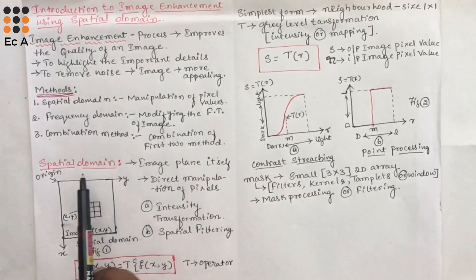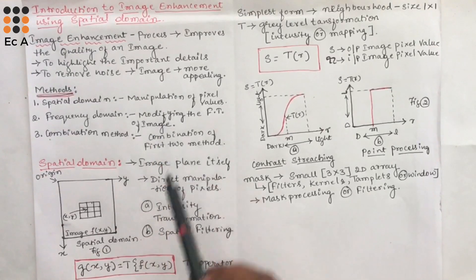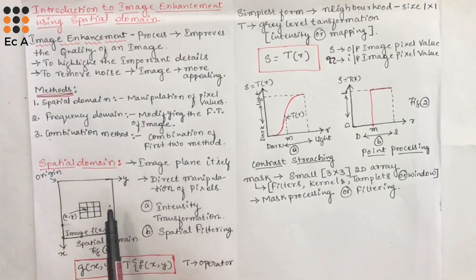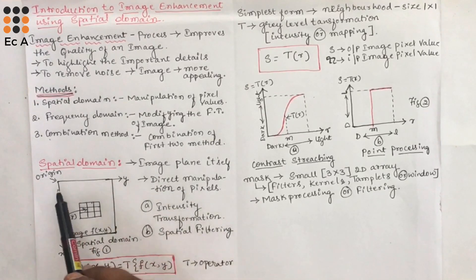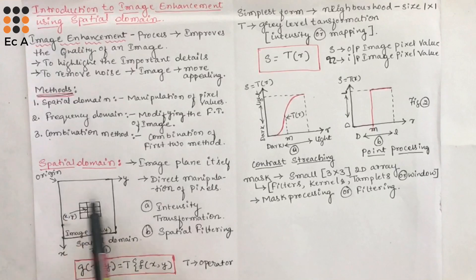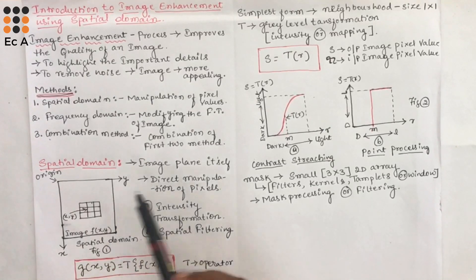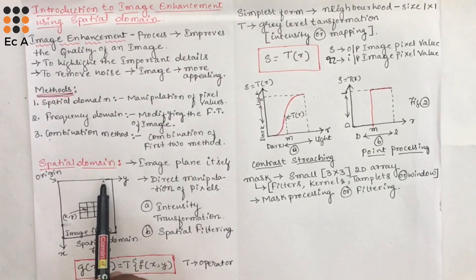The third method is the combination method, which is a combination of the first and second methods. The term spatial domain refers to the image plane itself. If you consider an image with pixel values as it is, we will call that the spatial domain. The image with pixel values is nothing but the spatial domain.